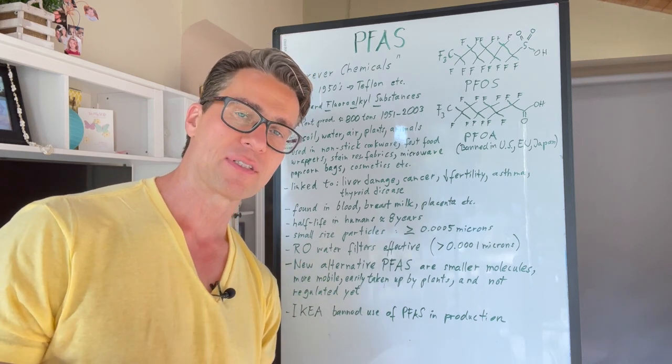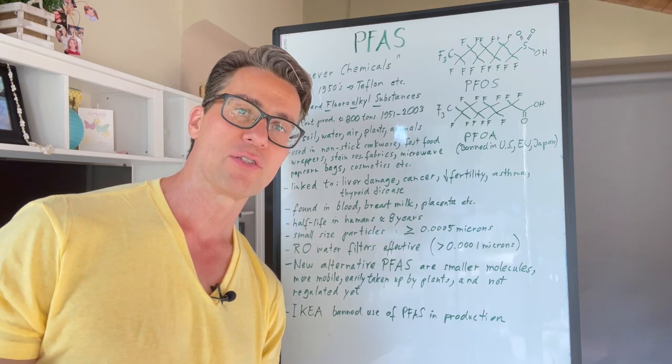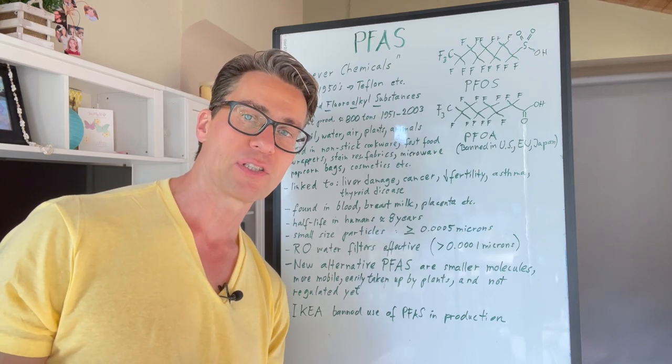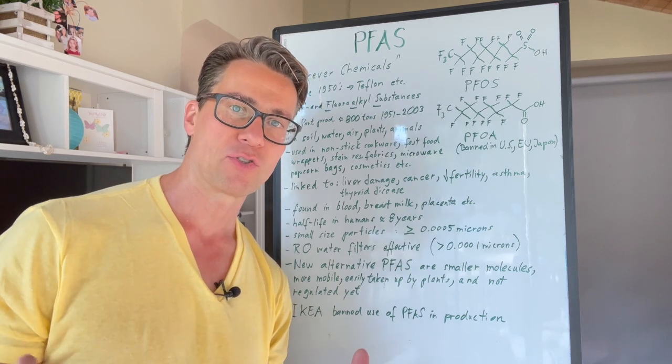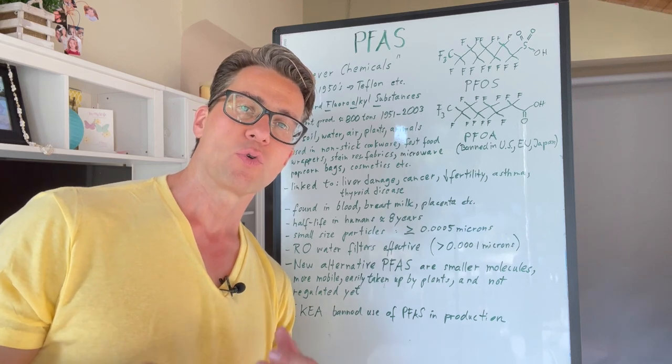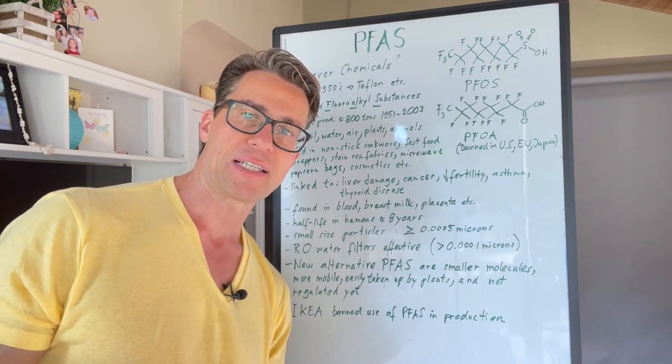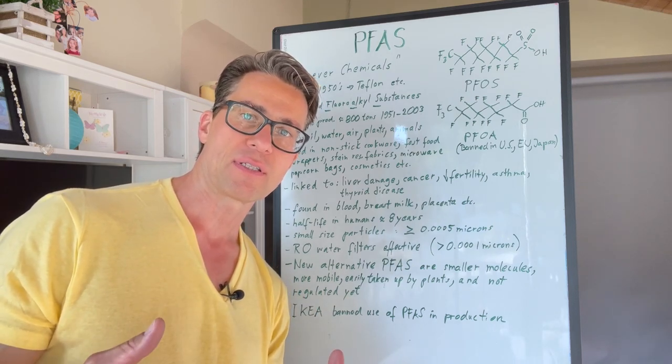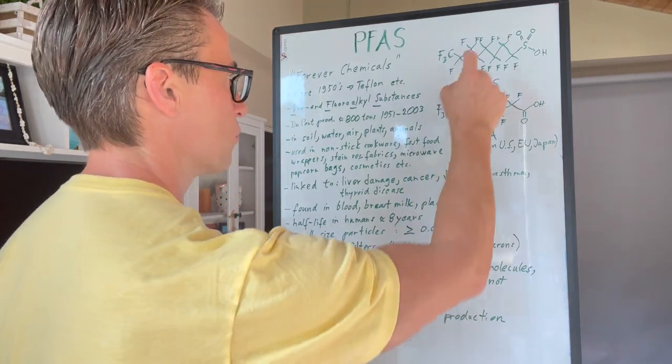Now it's estimated that since the 1950s to about 2013, DuPont produced about 800 tons of them, and certainly there are other industries that produce them as well. So the issue with these PFAS is that substances like PFOA and PFOS—we know these from Teflon.